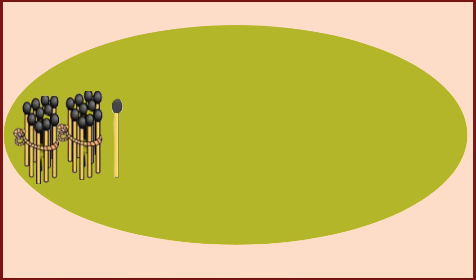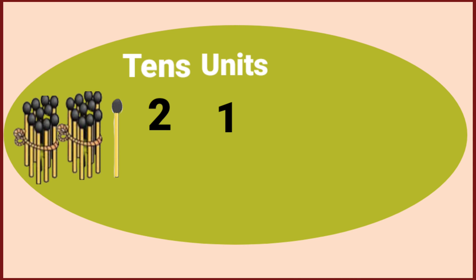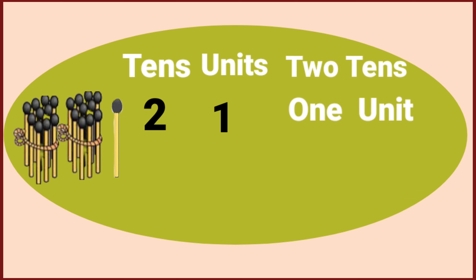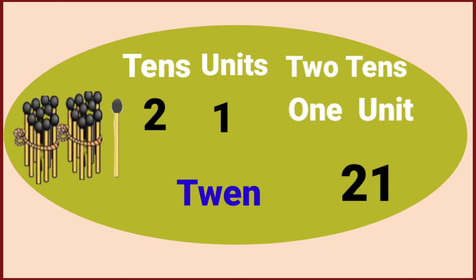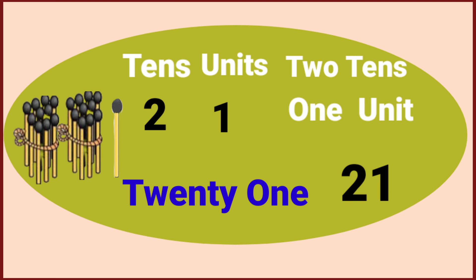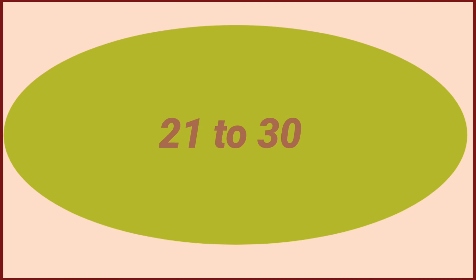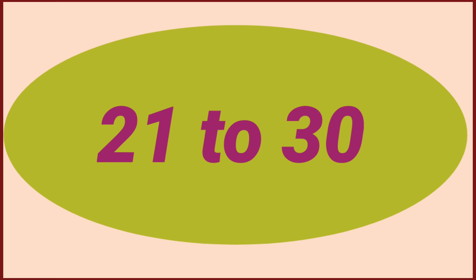These are twenty-one matchsticks: two in bundles and one single matchstick. It means two tens and one unit, so two tens and one unit makes twenty-one. Let's learn twenty-one to thirty.